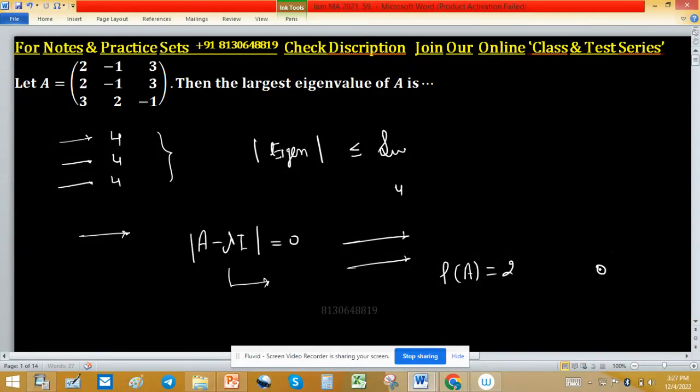One eigenvalue is 0, and trace of this matrix is 0. Trace of this matrix A is 0. One eigenvalue is 4, so other eigenvalue is minus 4. So 4 minus 4 is 0. These are three eigenvalues of this matrix without finding exact procedure. So these are eigenvalues and the largest eigenvalue is 4.